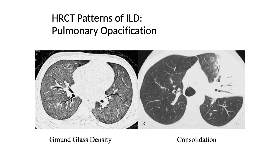On the right side of the image we see total solidification with air bronchogram — that is consolidation — complete consolidation. On the left side upper part there are ground glass opacities adjacent to the consolidation. This is the difference between ground glass density and consolidation. An X-ray and CT scan taken one hour apart: the X-ray is completely clear and normal, however the CT scan clearly shows ground glass opacities in the right basal lobe.